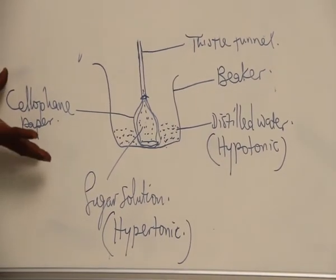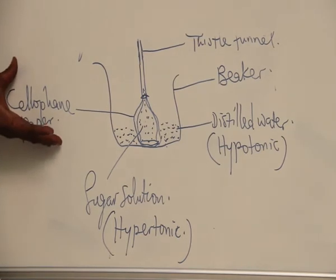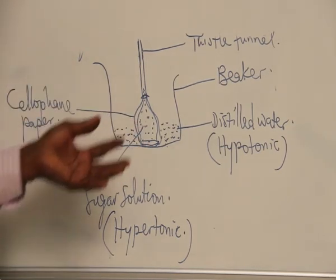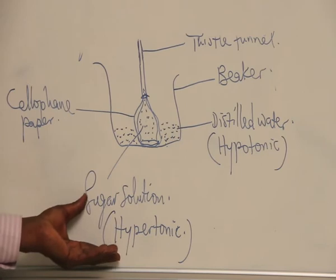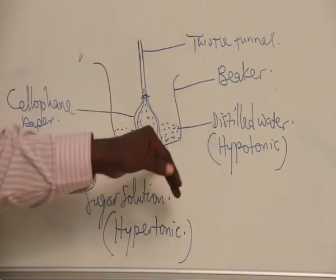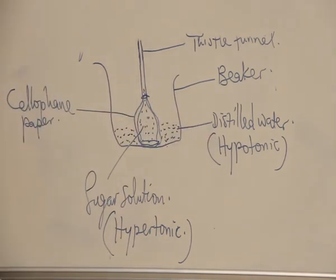The cellophane paper is a semi-permeable membrane. Sugar solution is the hypertonic solution. The distilled water is hypotonic.